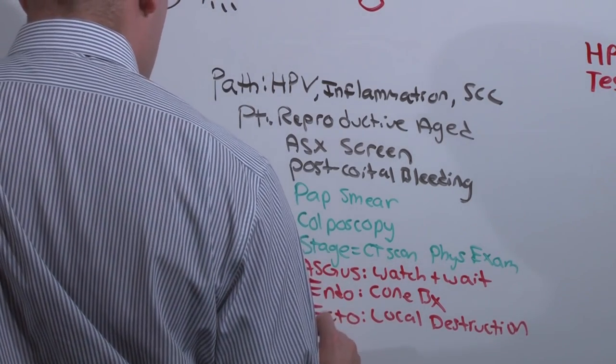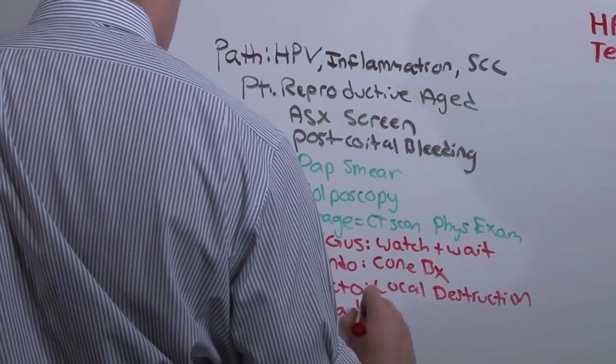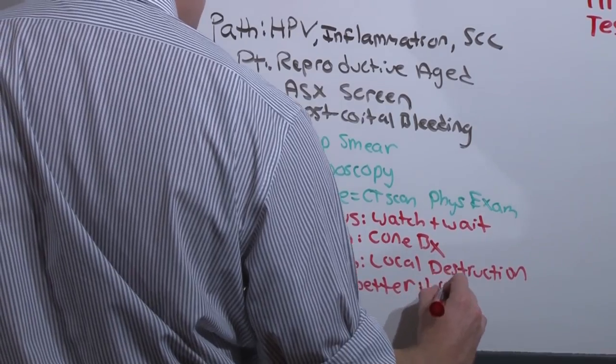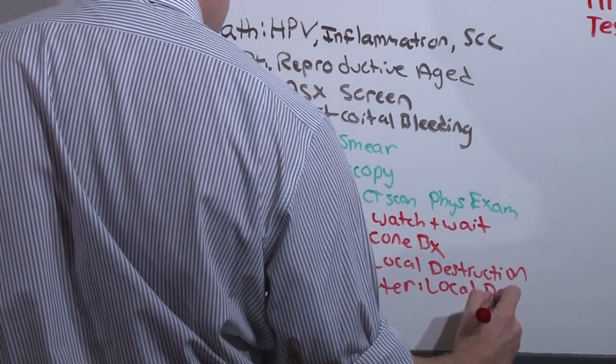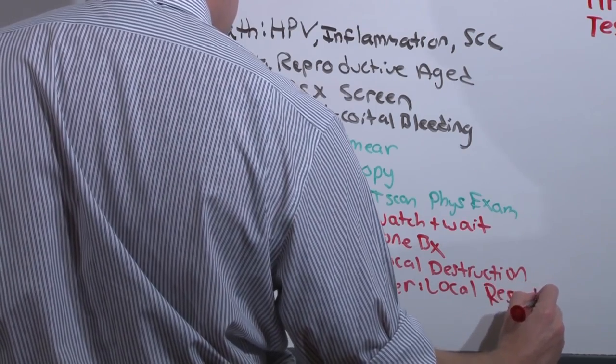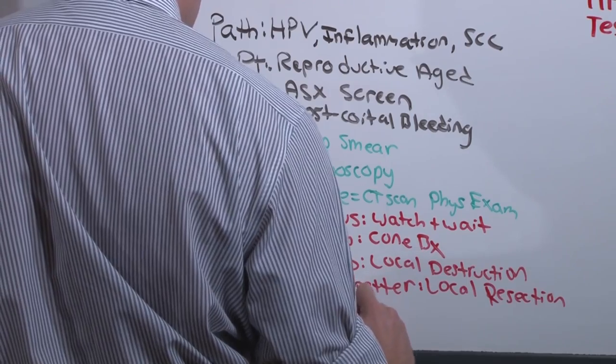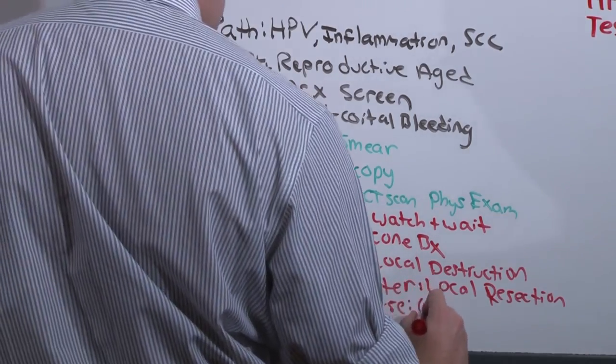If you actually have full-on cancer and it's 2A or better, you do local resection, not destruction. If it's stage 2B or worse, you do debulking, but then need chemo and radiation, usually a platinum-based therapy.